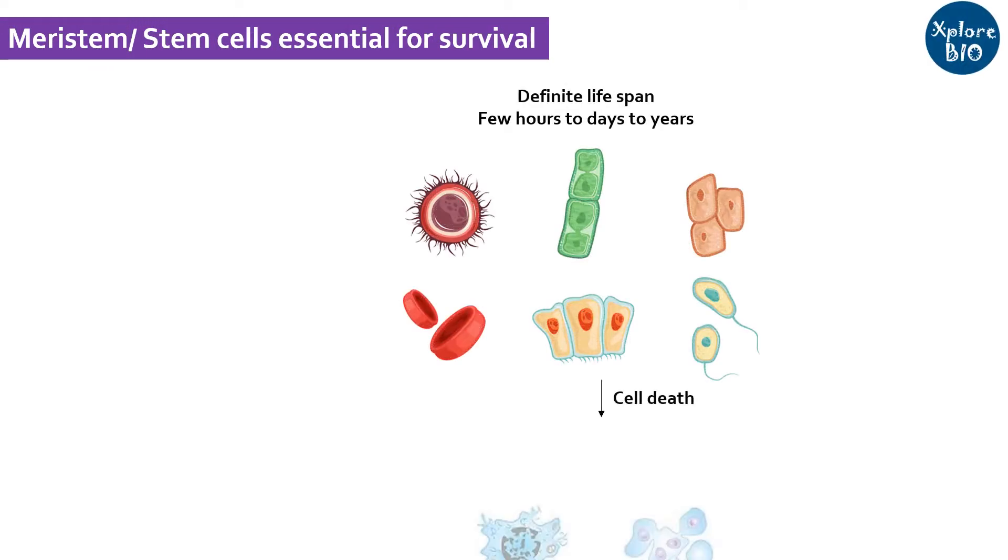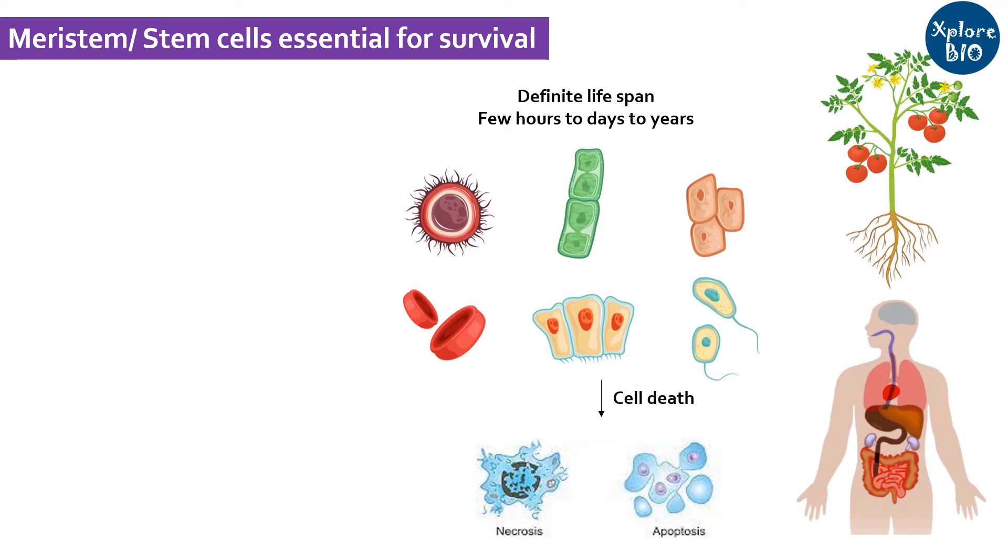Every normal cell in an organism has a definite life span and has to die. In order to survive, these cells need to be replaced by new and healthy cells to maintain proper functioning of an organism. Organisms have a unique reservoir of undifferentiated cells called stem cells or meristem cells that have the ability to divide, replace old cells and give rise to different types of cell fates. These mass of cells provide a constant supply of fresh cells for an organism to grow and produce various types of cells, tissues and organs.